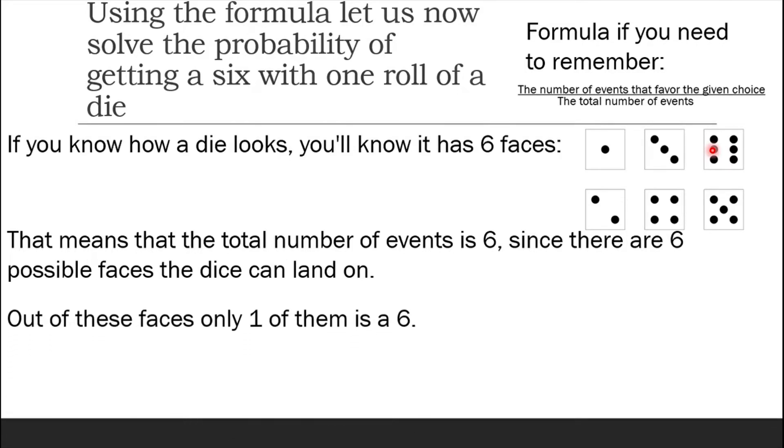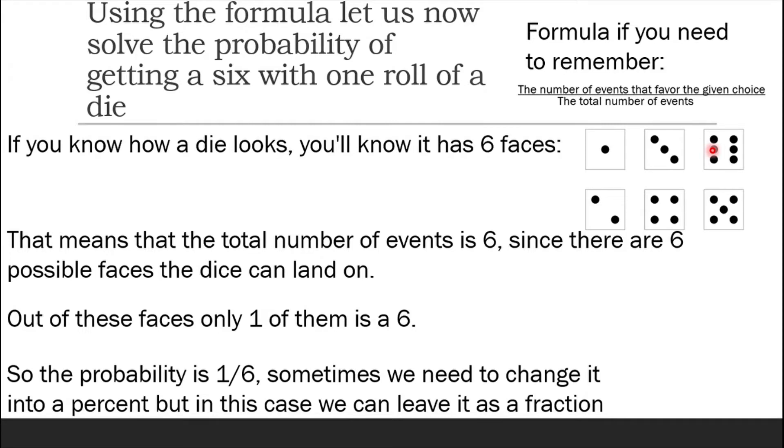Out of these faces, only one of them is a 6. So the probability is 1 out of 6 since 1 is the amount that favor the given choice of getting a 6. And 6 is the total number of faces or total number of events. Sometimes we need to change it into a percent, but in this case we can leave it as a fraction.